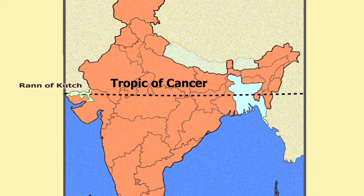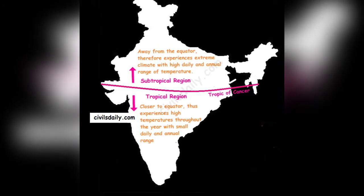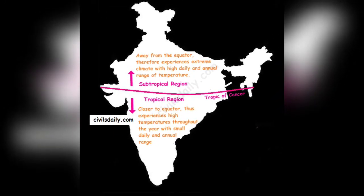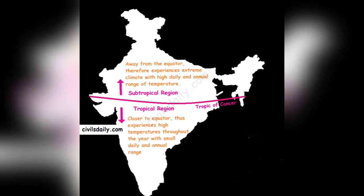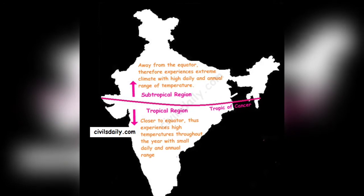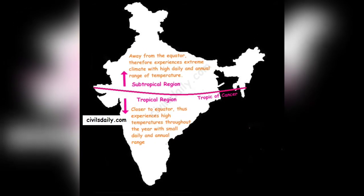The Tropic of Cancer passes from Rann of Kutch in the west to Mizoram in the east, dividing the country into the tropical region to the south and the subtropical region to the north. Since the tropical region lies closer to the equator and is surrounded by water bodies, it experiences a moderate type of climate, while the subtropical region, being away from the equator, experiences an extreme or continental type of climate. In general, temperature increases from the north towards the south of the country.